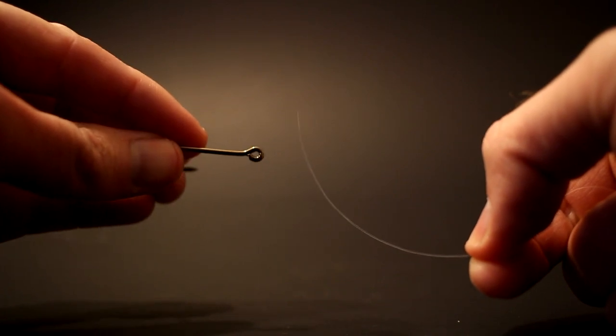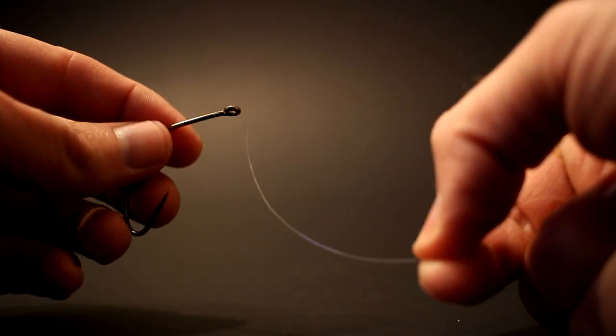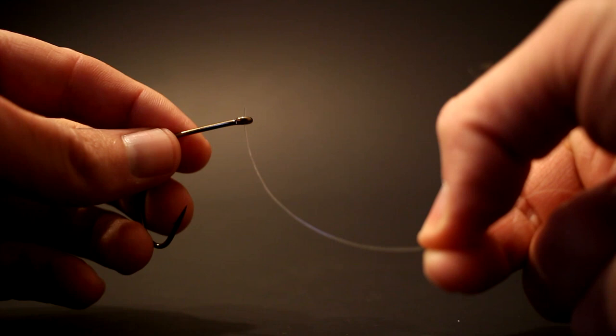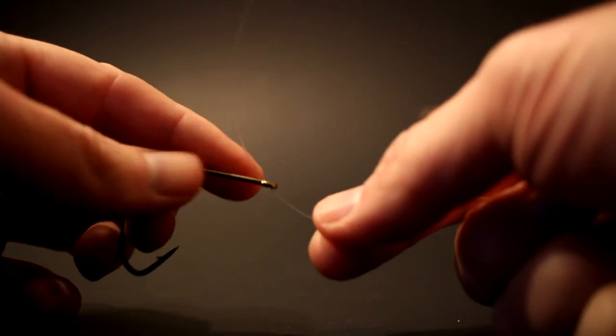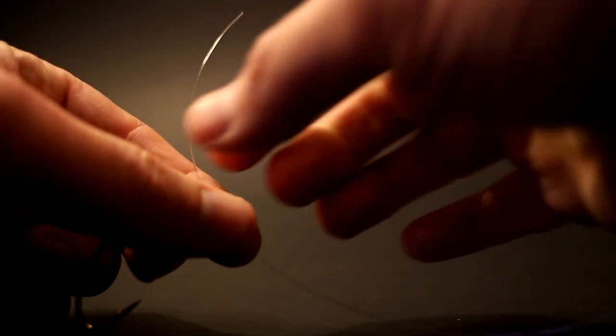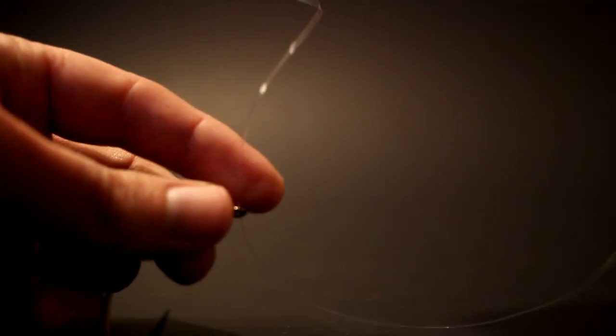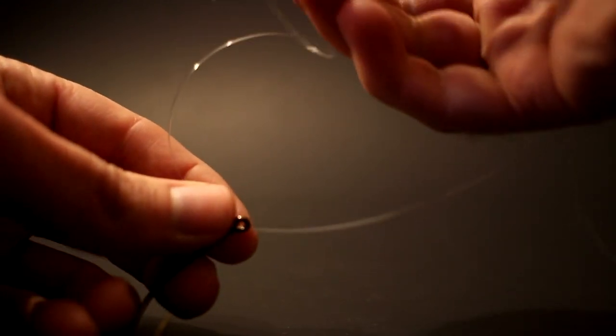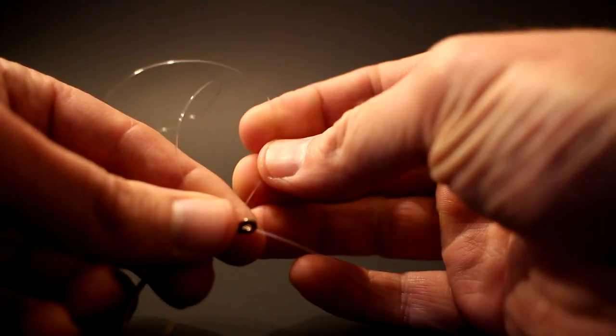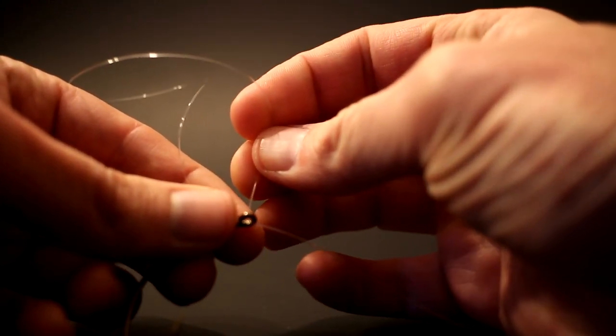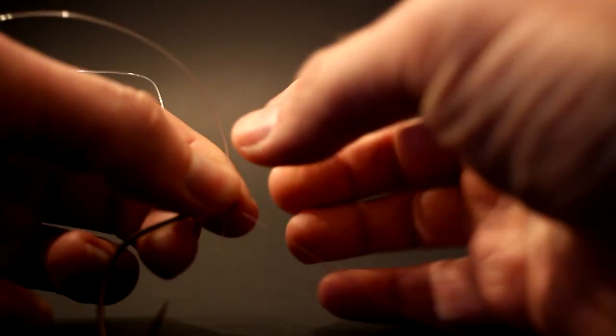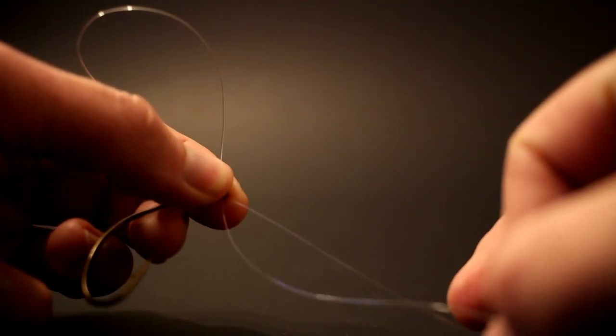Step one, of course you can see the eye of the hook. We're going to feed our line up through the eye. I'd pull probably about six inches above, seven, and all we're going to do is take that line and bring it back down through the eye. We're basically creating a giant loop. And keep in mind as you pull down, that loop is going to become smaller.